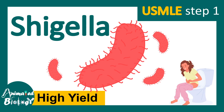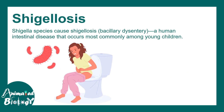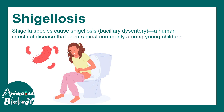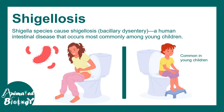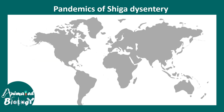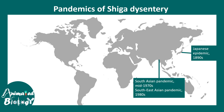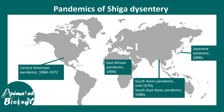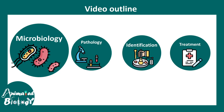In this video we'll talk about Shigella — this is a high yield video for USMLE Step 1. Shigella is the causative bacteria for shigellosis, which is a bacterial dysentery affecting young children. Shigella is the causative organism for the pandemic of shiga dysentery, which in the past occurred in Japan, Southeast Asia, America, and Africa, and was pretty common in the early 1990s.